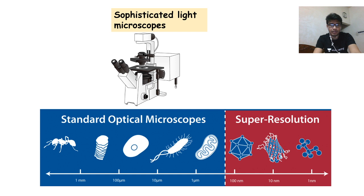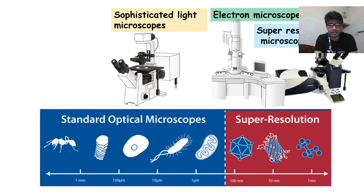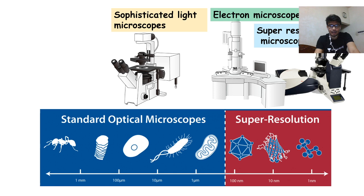You are never going to see a virus with a normal light microscope — you need an electron microscope or super-resolution microscope. The best possible resolution for a sophisticated light microscope is nearly 200 nanometers; beyond that it cannot resolve. So if the distance between two points is below 200 nm, such as 100 nm, it will never resolve those features. Virus cannot be detected with a light microscope.